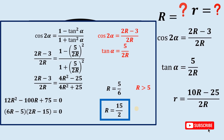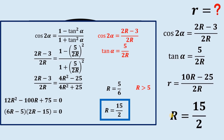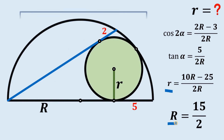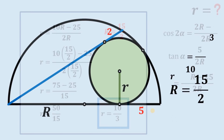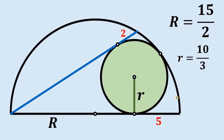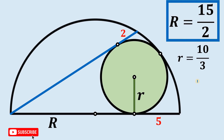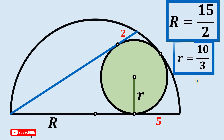So we have the length of capital R. Now we can use our earlier equation to solve for the value of small r. Substituting, we get that the length of small r equals 10 over 3. And that is our answer. Therefore, given this figure, the length of capital R equals 15 over 2, and the length of small r equals 10 over 3.